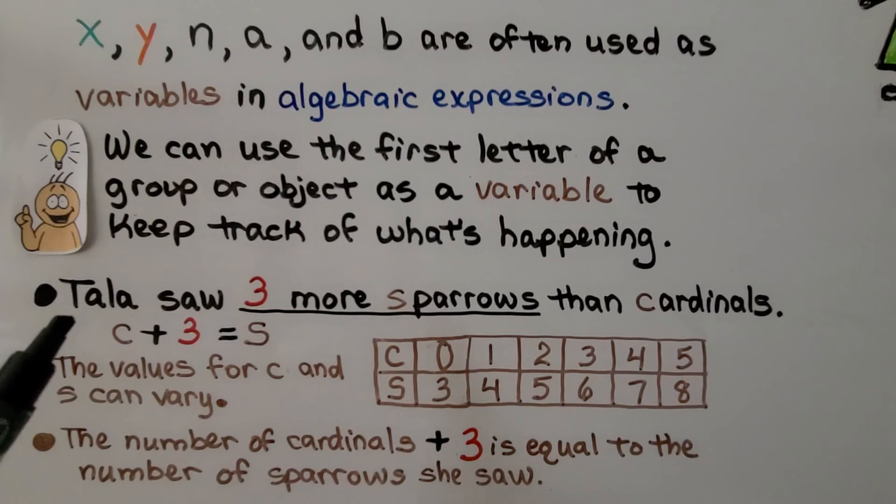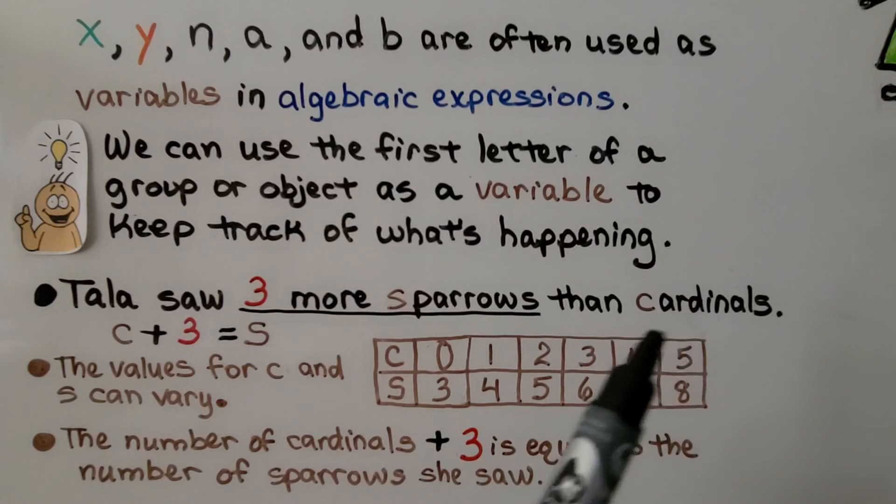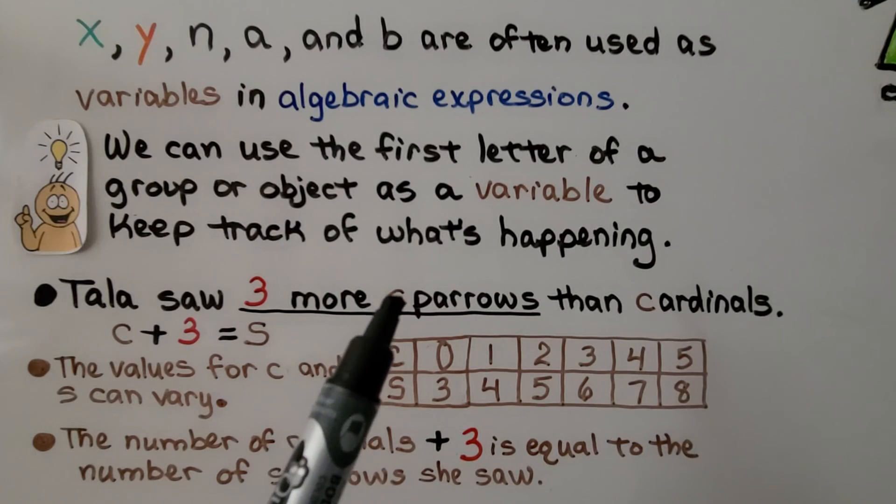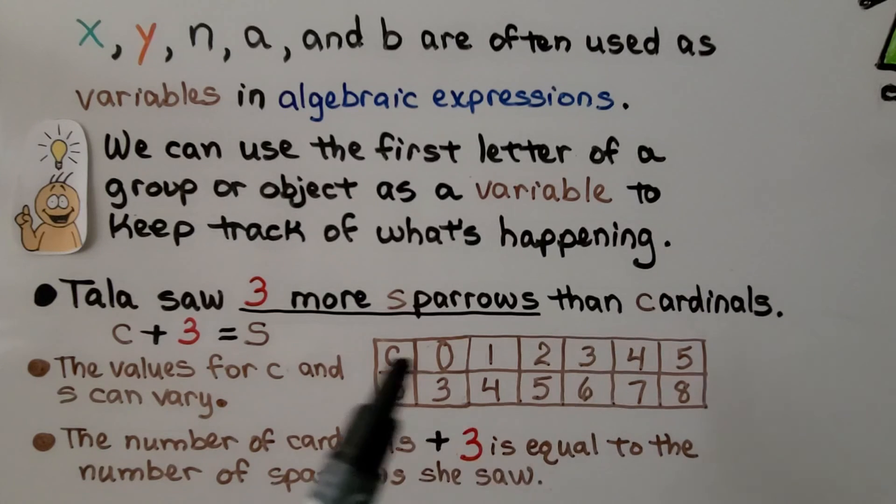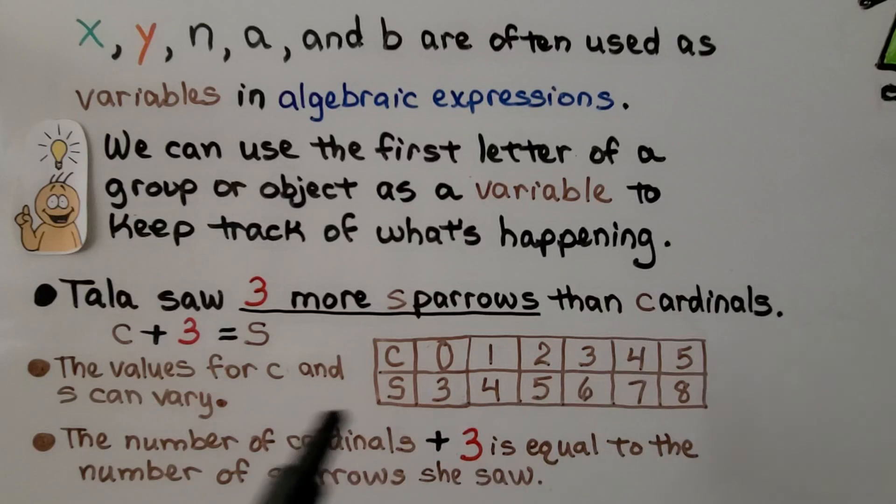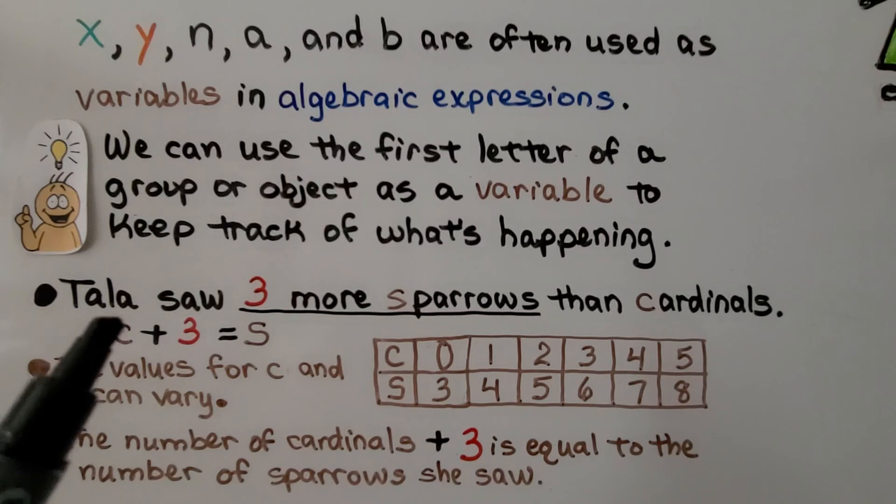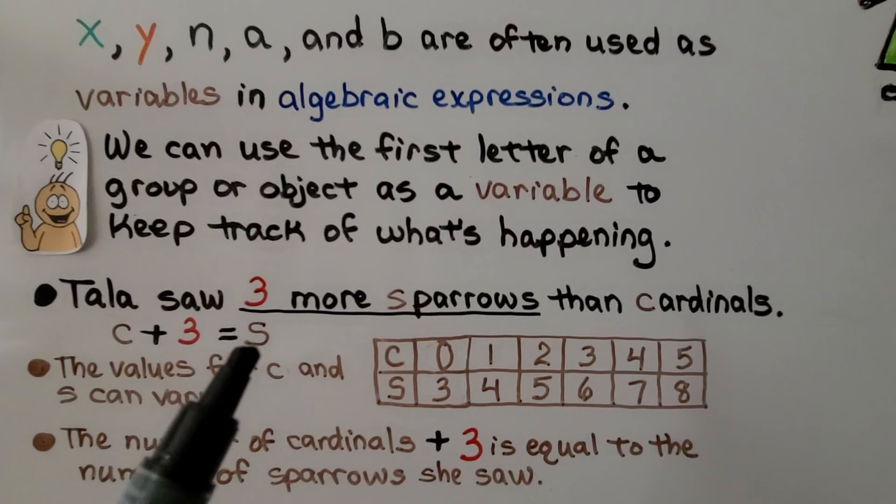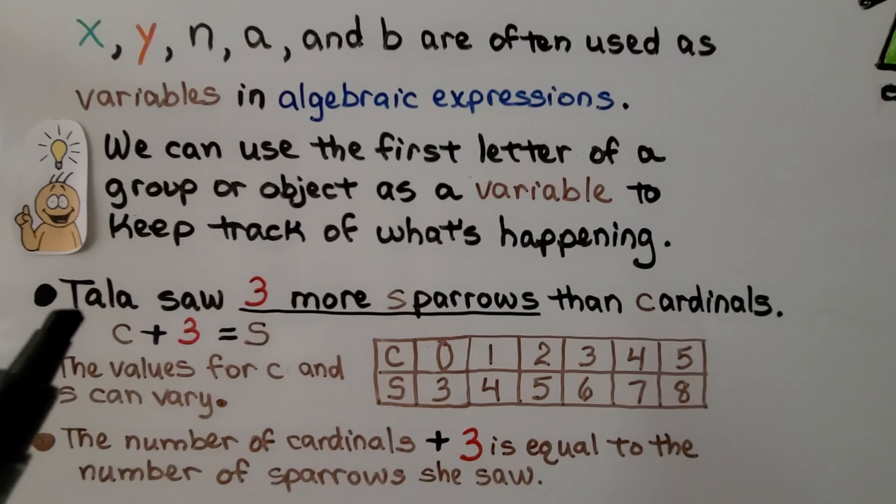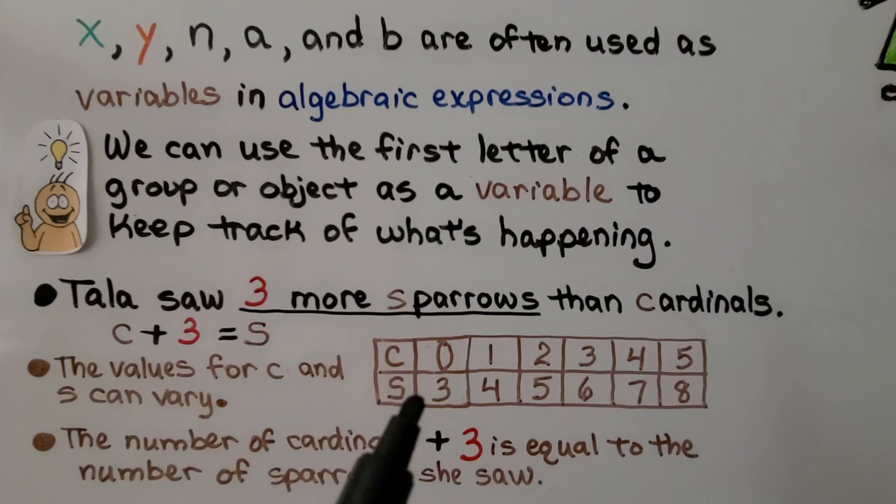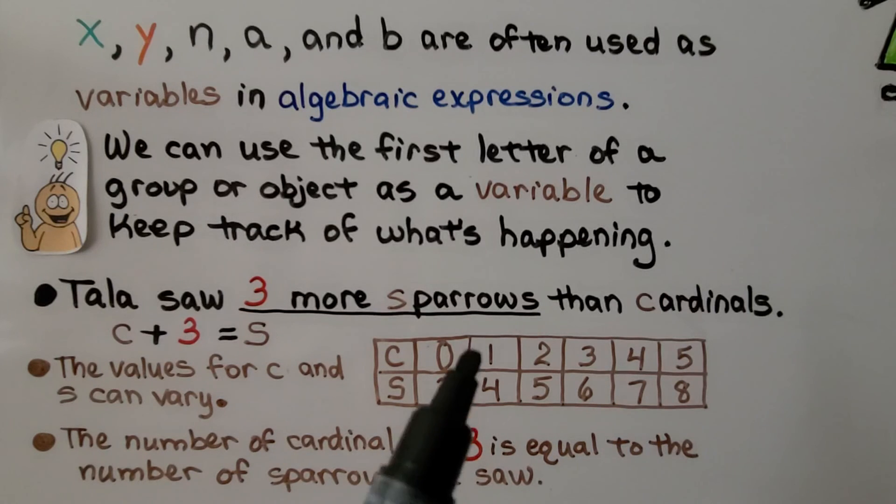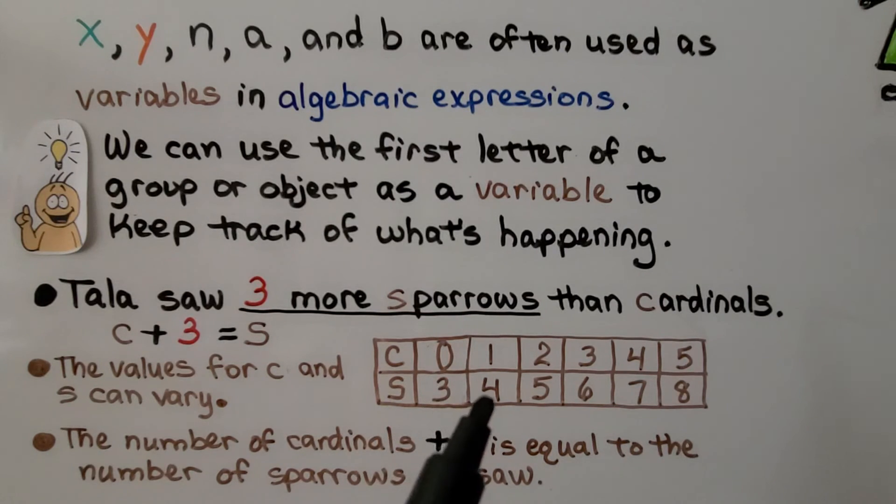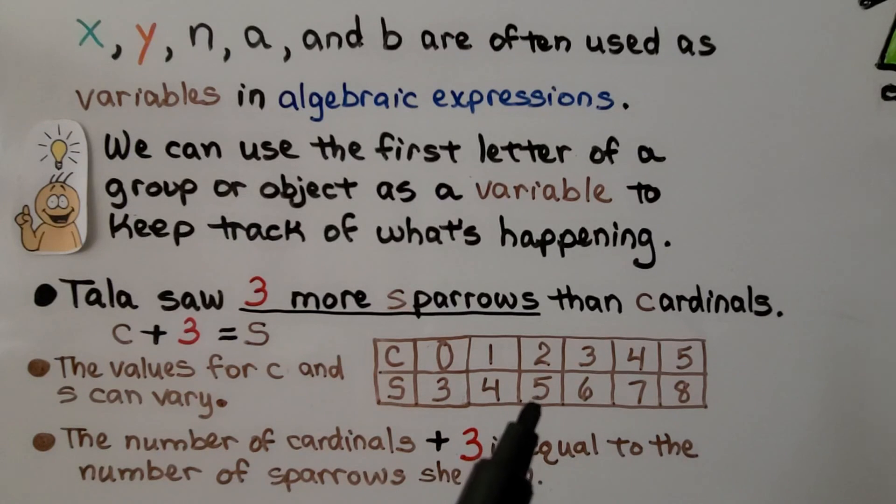If we see that Tala saw 3 more sparrows than cardinals, we could write an algebraic expression using s for sparrows and c for cardinals. There's 3 more sparrows than cardinals. That means whatever the number of cardinals are, if we add 3 to it, that's going to be the number of sparrows because sparrows is 3 more than cardinals. The values for c and s can vary. If she saw 0 cardinals, well, 3 more would be 3 sparrows. If she saw 1 cardinal, well then the sparrows would be 4. If she saw 2 cardinals, well then the sparrows would be 5, and so on. The number of cardinals plus 3 is equal to the number of sparrows she saw.